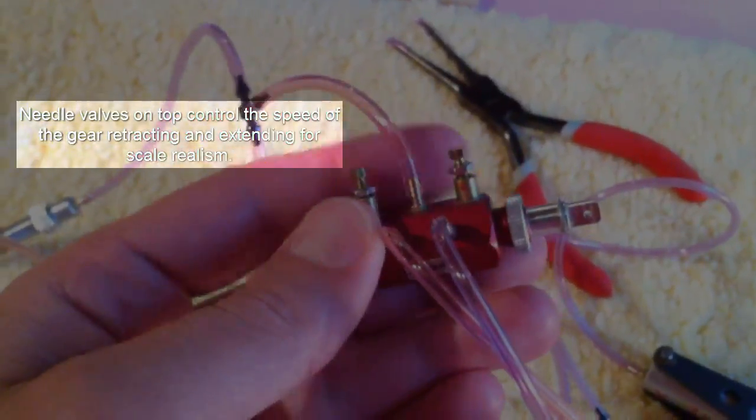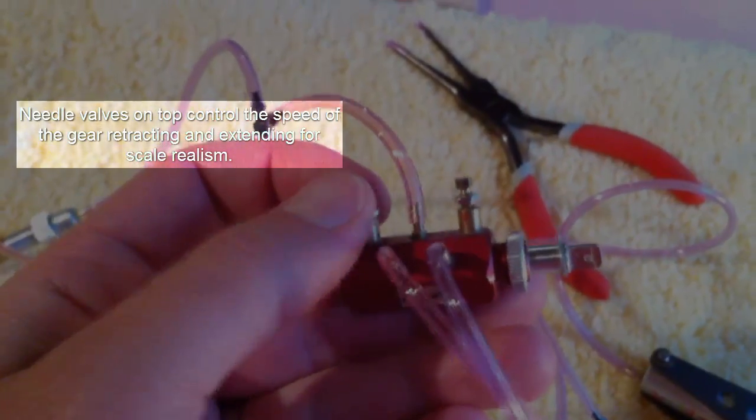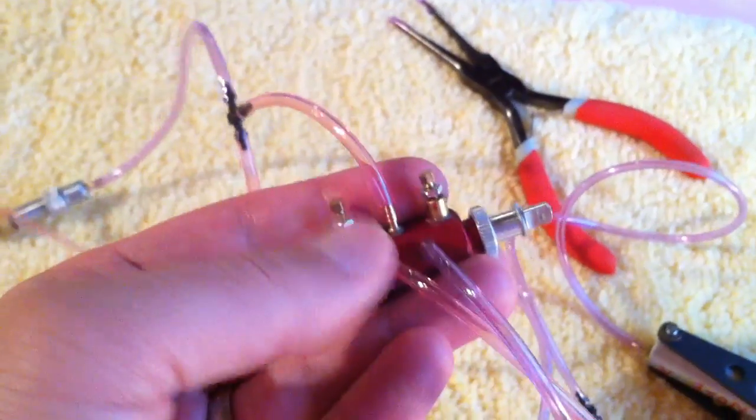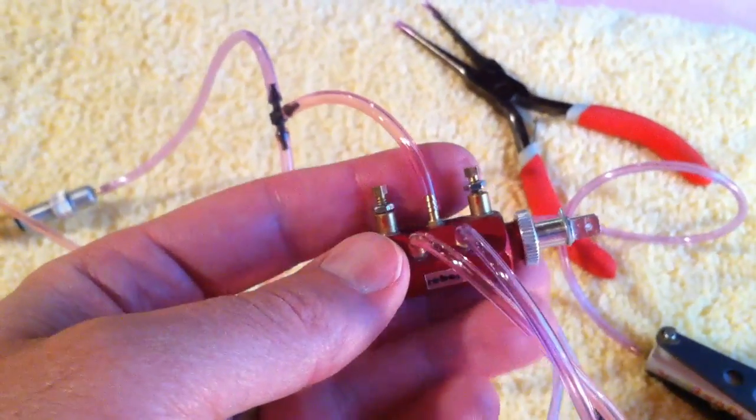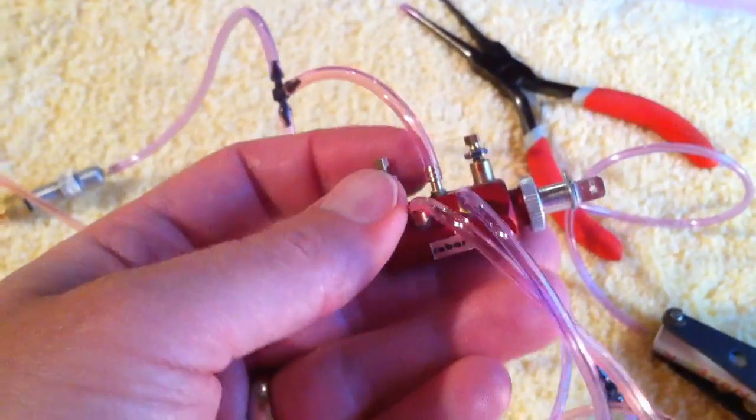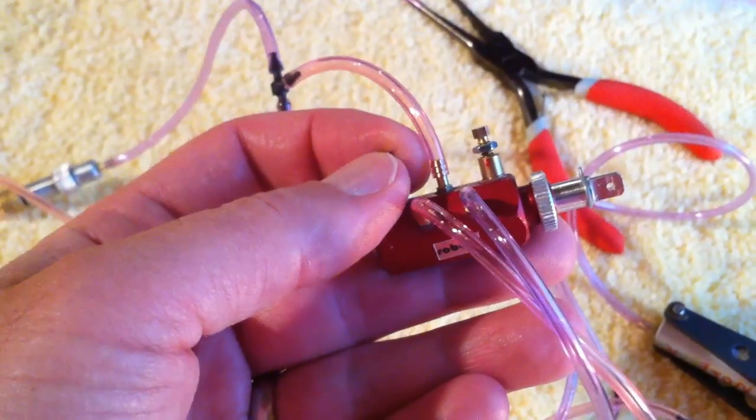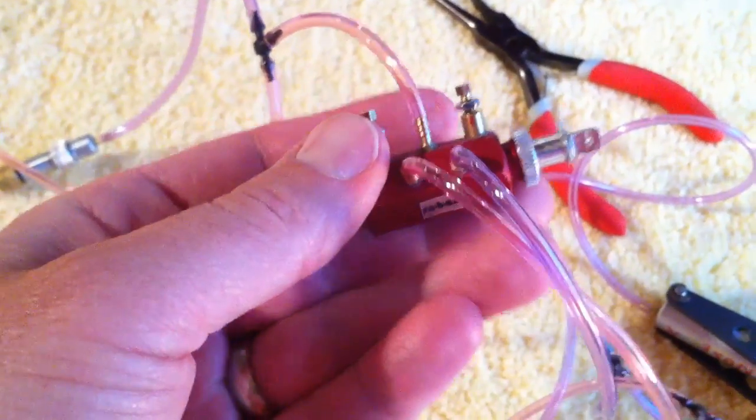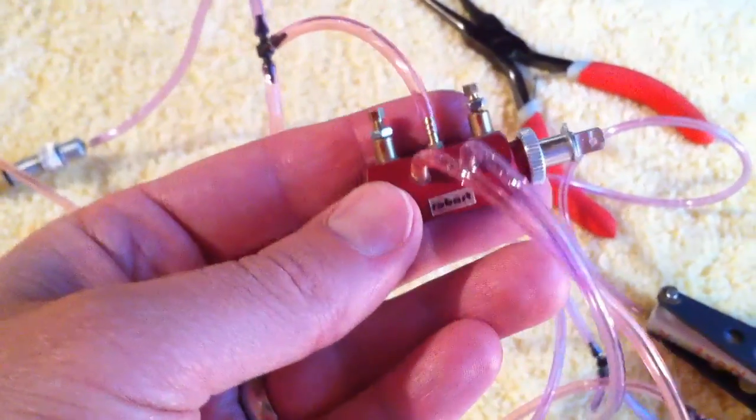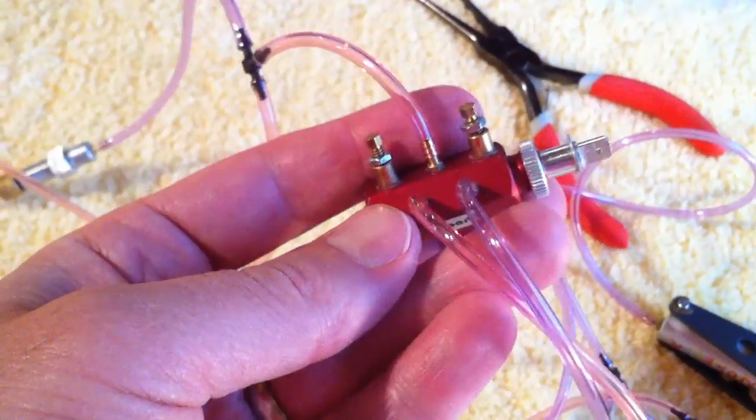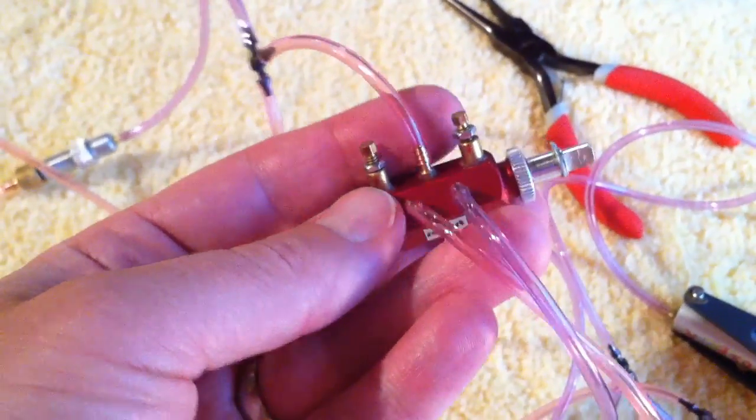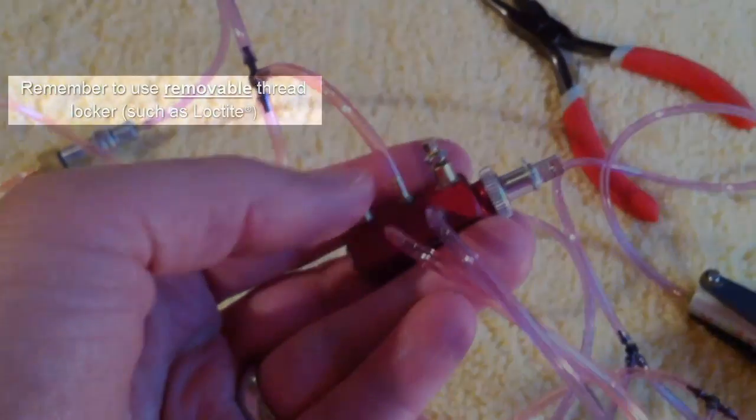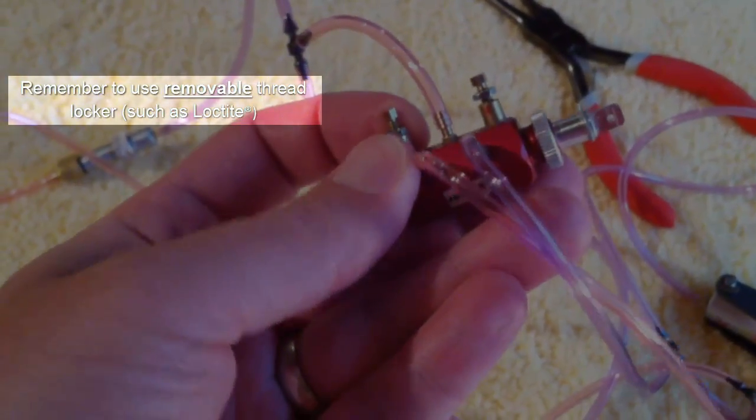One final thing on the speed control here - these are needle valves on the top here and based on how closed or open you have that, it dictates how much air will go to the retract. If I open up all the way they'll just pop open, which is not very realistic. So the more you close it, the slower it goes and the more realistic your retracts will look as you extend them or retract them. You just have to play with that until you get to where you like it, and then you lock them with these screws at the bottom with a little lock tight and set them in place.